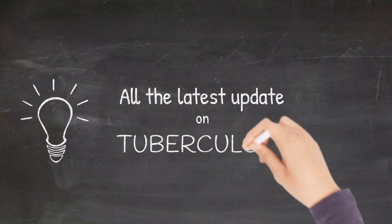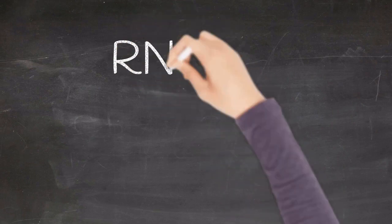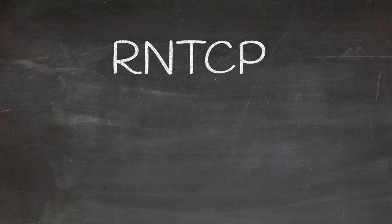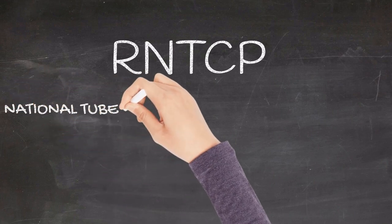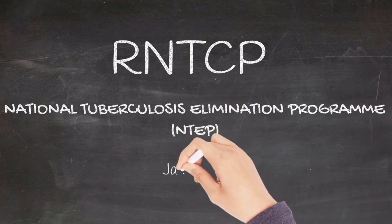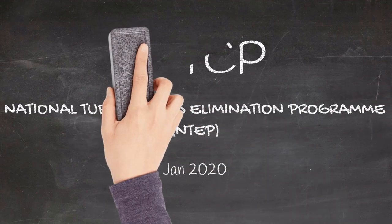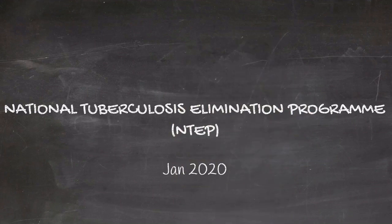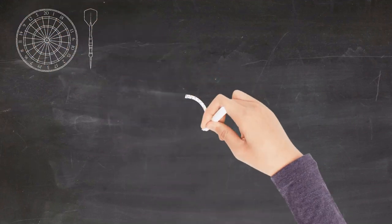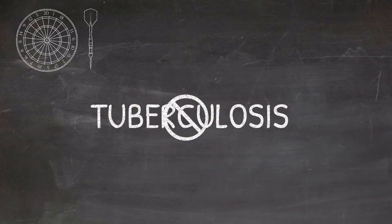Until recently, the tuberculosis control program in India was called the Revised National Tuberculosis Control Program, abbreviated as RNTCP. RNTCP is now relabeled as National Tuberculosis Elimination Program from January 2020. The target of this program is to eliminate tuberculosis by 2025.